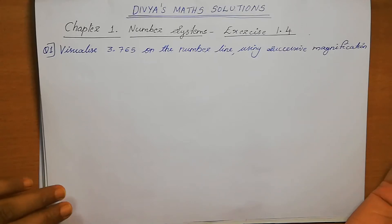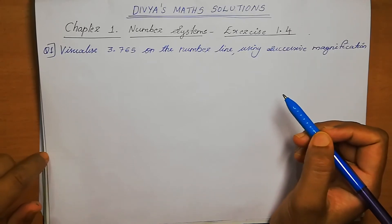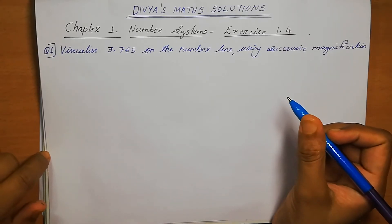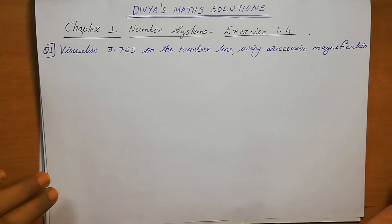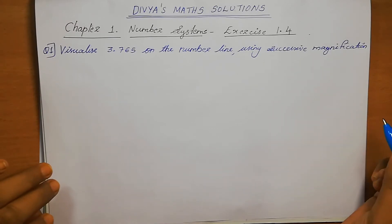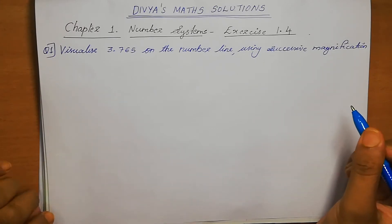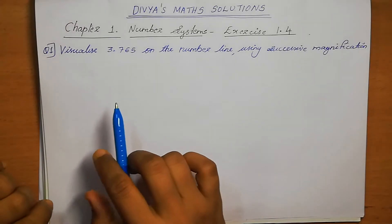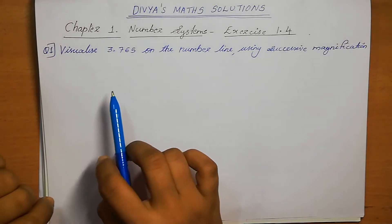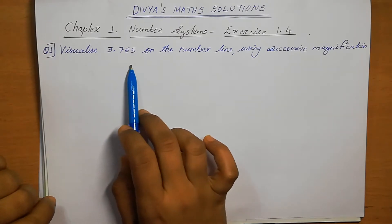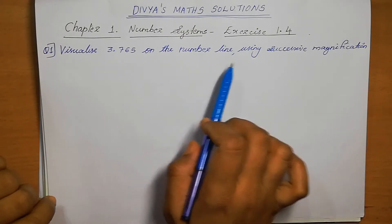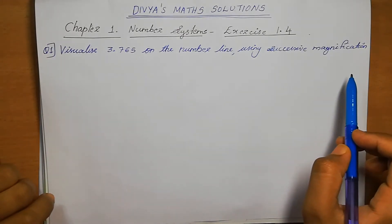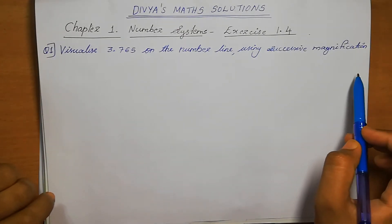Dear students, welcome to Divya Smart Solutions. Today we are going to discuss Chapter 1, Number Systems, Exercise 1.4, Question number 1: Visualize 3.765 on the number line using successive magnification.